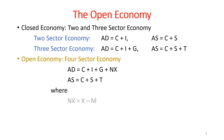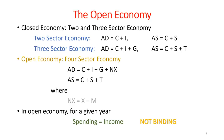In an open economy for a given year, the spending equal to income condition is not binding. That is, a country can spend more than its income or output by borrowing from abroad, or it can spend less, save the additional amount, and lend the difference to foreigners.